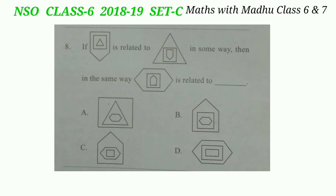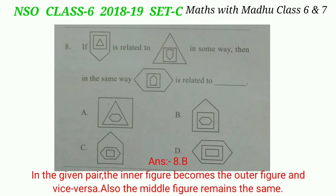Question 8: if this figure is related to another figure in some way, then in the same way this figure is related to dash. In the first figure, the inner figure becomes the outer figure and the outer figure becomes the inner figure. The middle figure remains the same. So the answer will be option B.